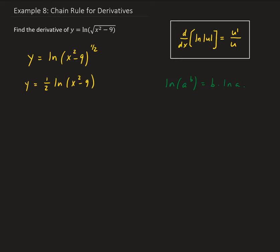So now we can go ahead and apply the chain rule for this to find the derivative. Again, one half is just a constant.